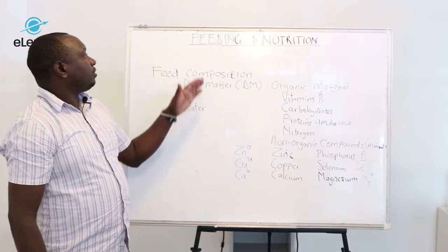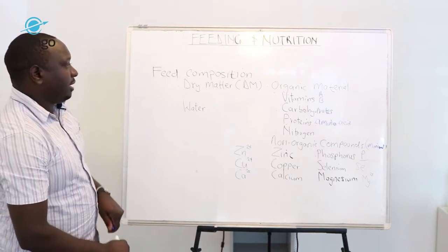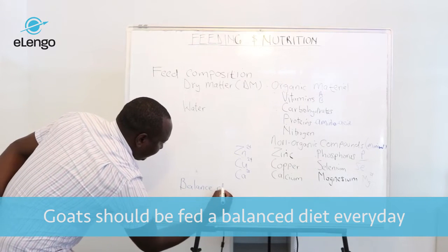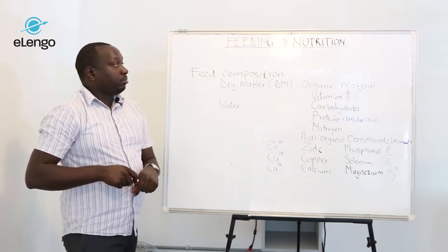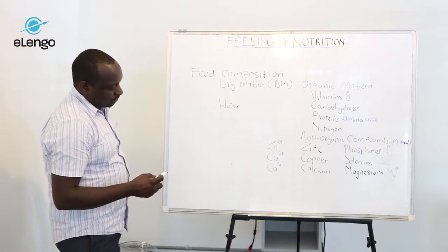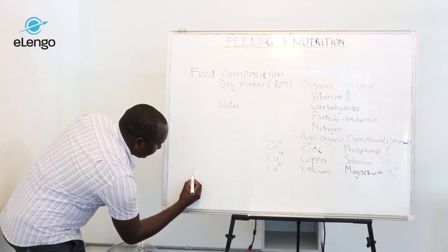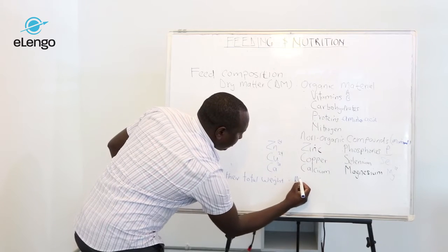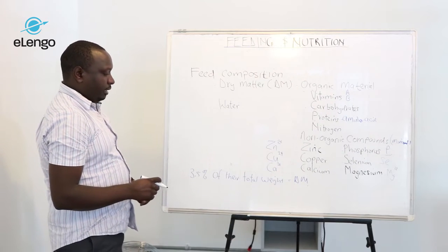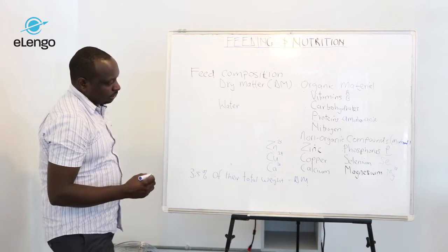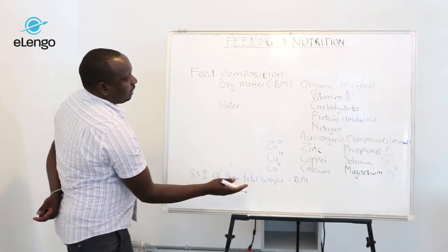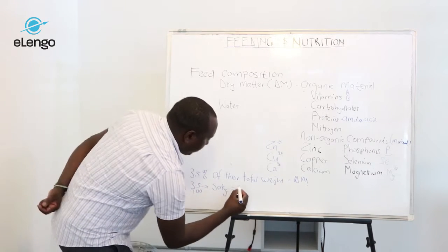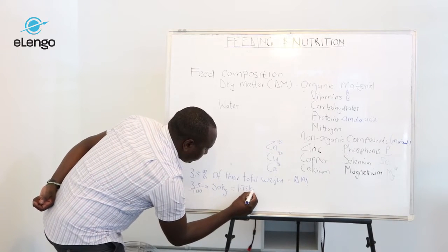Every feed given to an animal must contain all these compounds to make the feed balanced. We also need to balance the diet when feeding our goats. Both does and bucks should receive 3.5 percent of their total body weight as dry matter (DM). For example, assuming a goat weighs 50 kilos, that goat would receive 3.5 percent of 50 kilos, which comes to 1.75 kilos of dry matter.